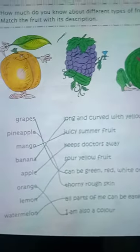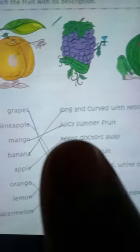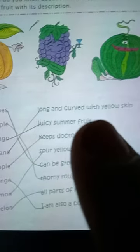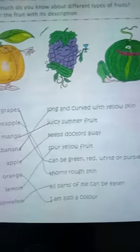Grapes can be green, red, white, and purple. Next one is pineapple — you have to match it: thorny, rough skin. Next one is mango — mango is a juicy summer fruit. Banana means long and curved with yellow skin.